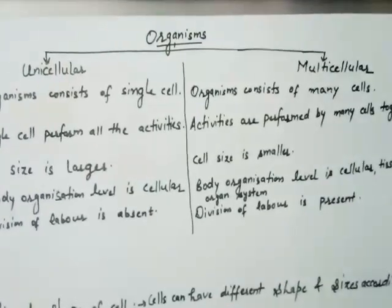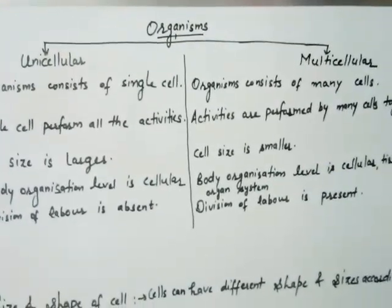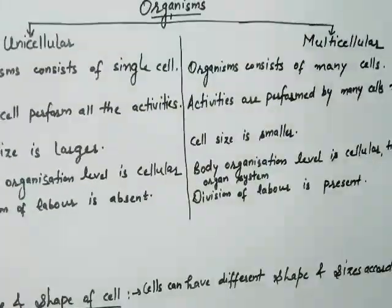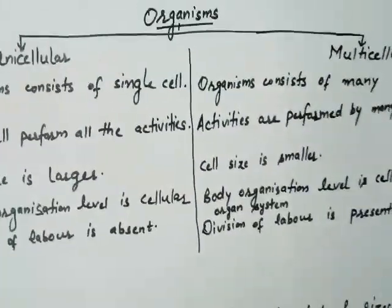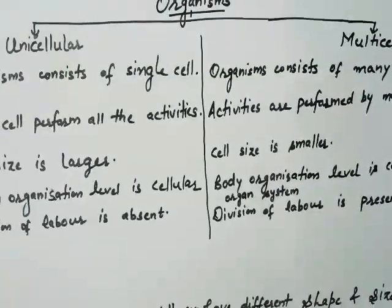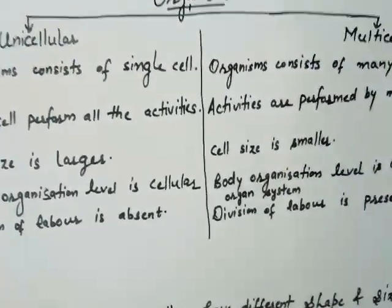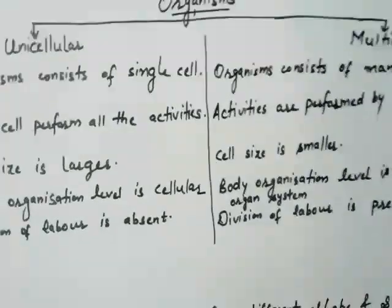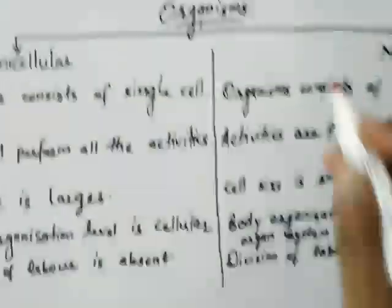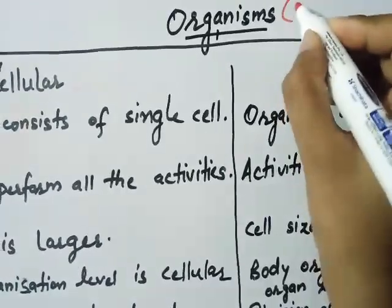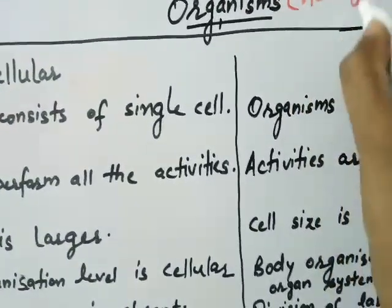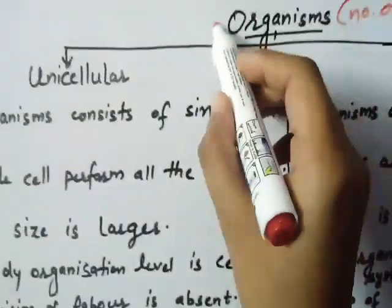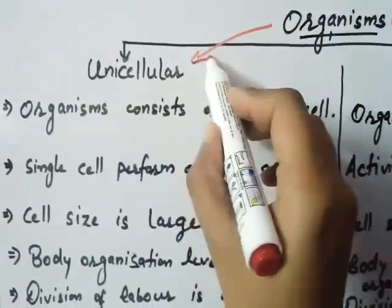Students, in the last video we discussed about the cell and the cell theory. Now in this video we will talk about the types of organisms on the basis of number of cells or the complexity of the cell structure. Firstly, we will talk about the type of organism on the basis of number of cells.